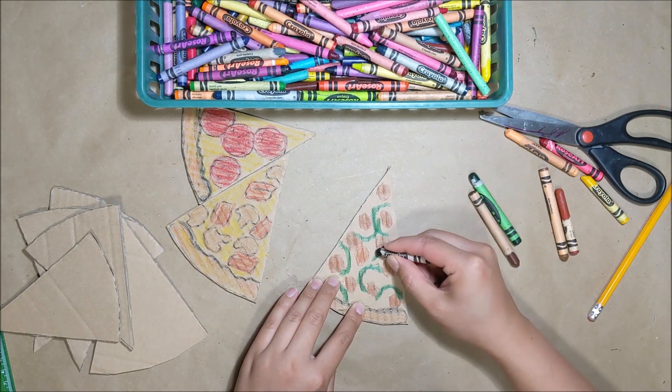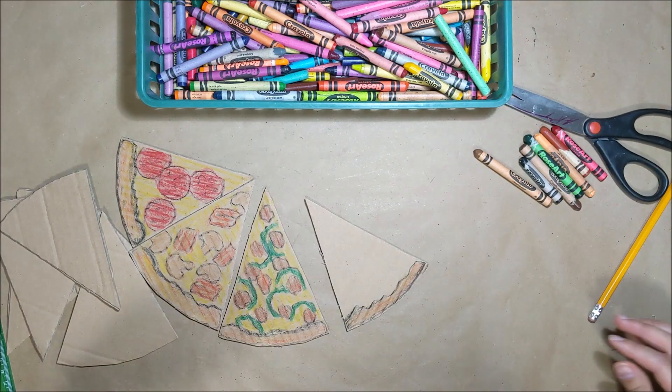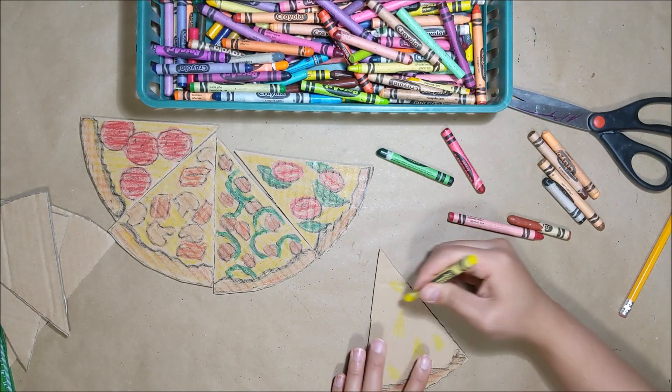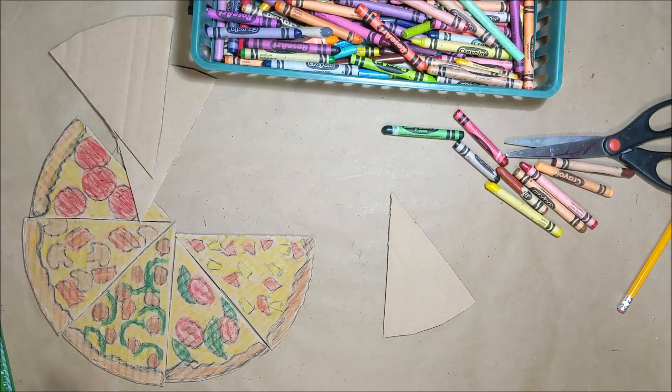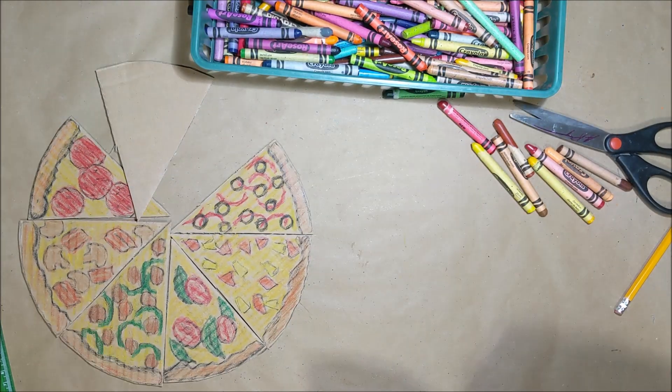Here's my next slice. It's going to be bell peppers and sausage. This one is tomatoes and basil. This is one of my favorites, pineapple and ham.